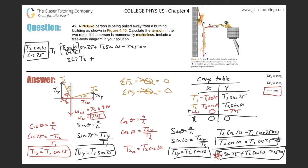Continuing: sin(10°) = 0.174, so we have 3.67·T2 + 0.174·T2 = 745. Combining like terms gives 3.84·T2 = 745. Dividing both sides by 3.84, we get T2 = 745 / 3.84 = 194 newtons.